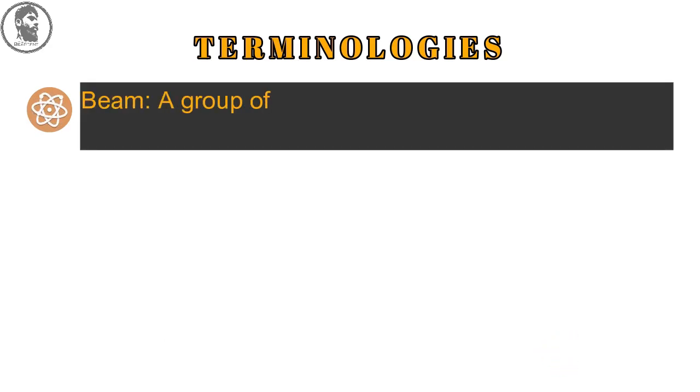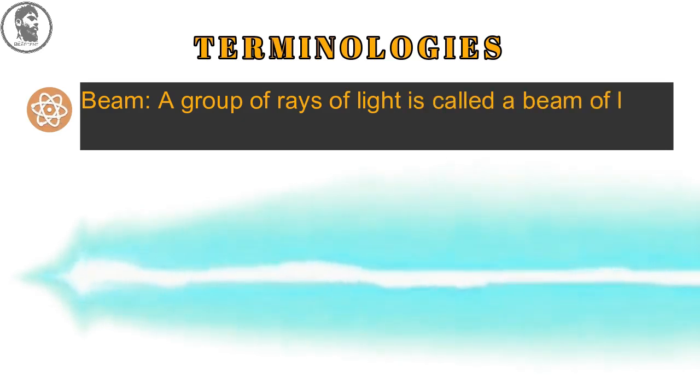Third, beam: A beam is a group of rays of light is called as a beam of light, like a laser light which is monochromatic light.